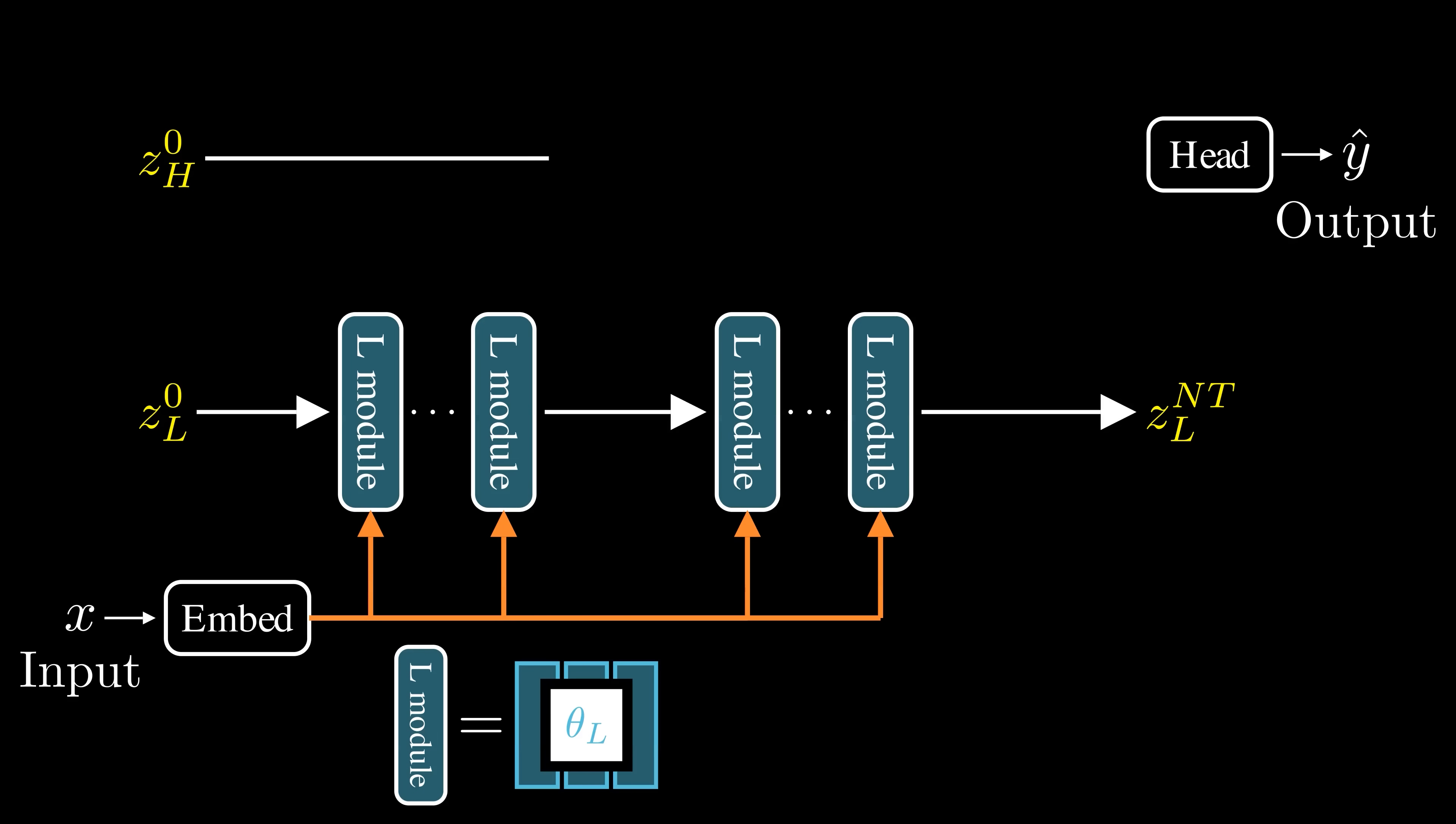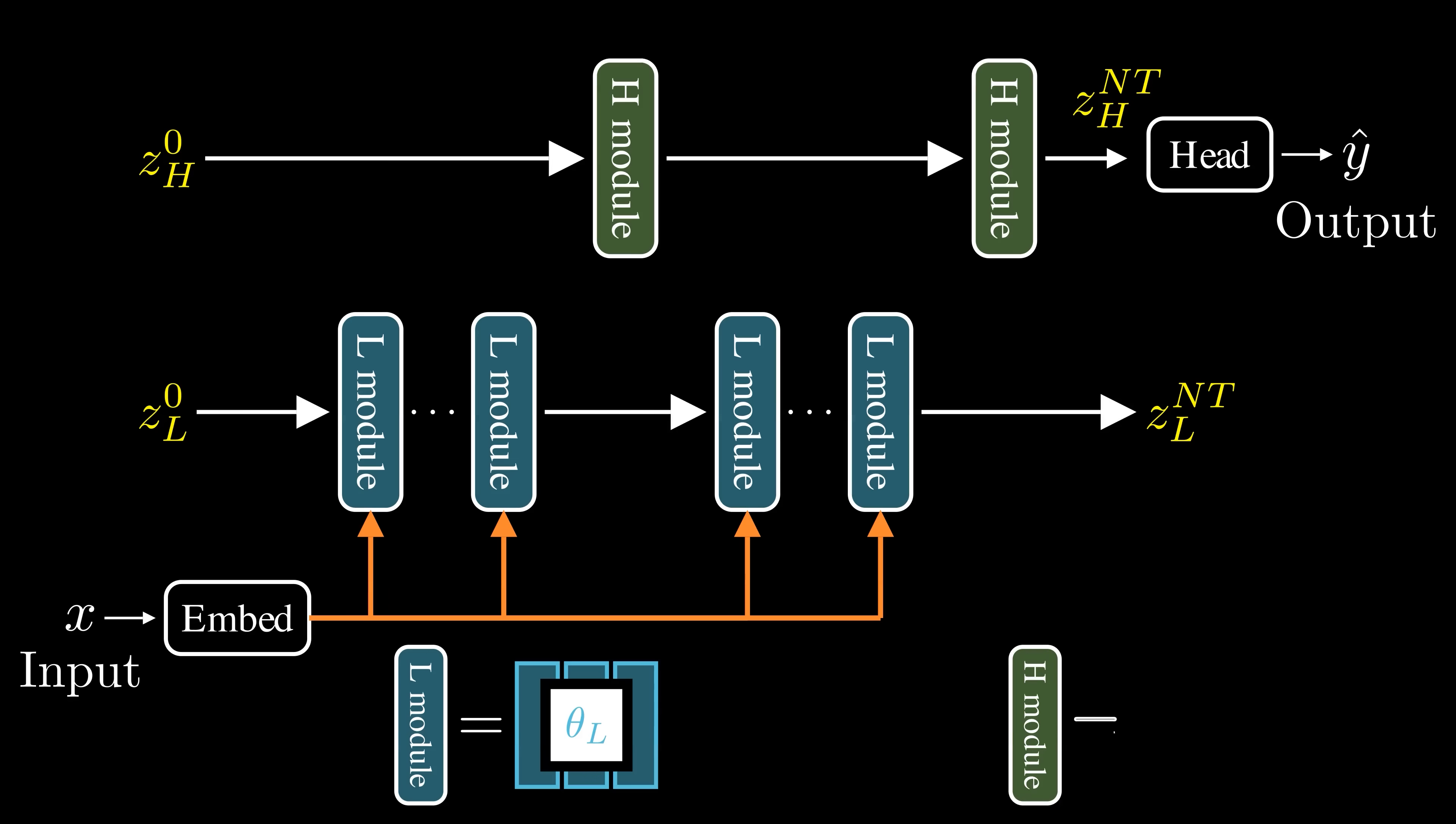To enhance reasoning, we introduce a high-level recurrent model on top, designed for more abstract, deliberate processing. Like low-level modules, these high-level modules are also recurrent blocks, but with their own distinct set of parameters.